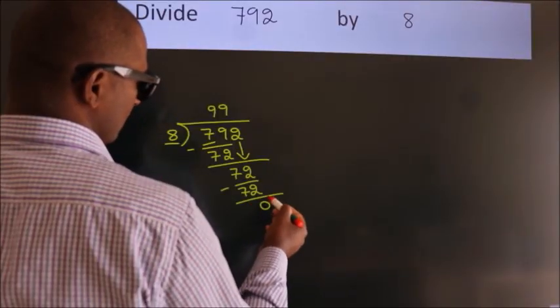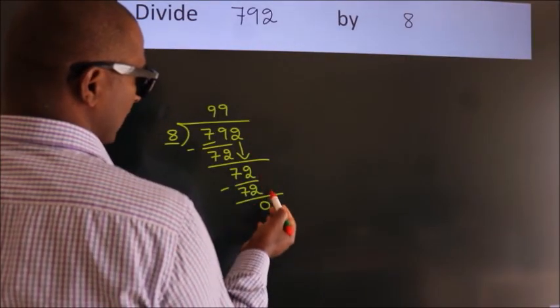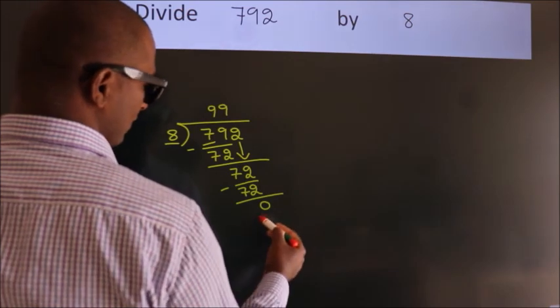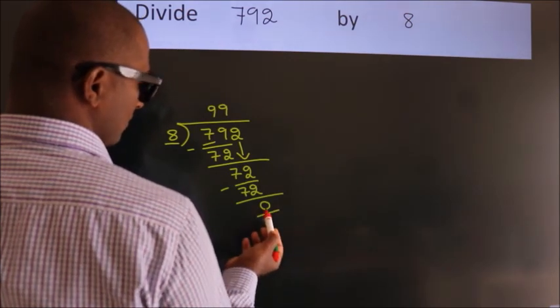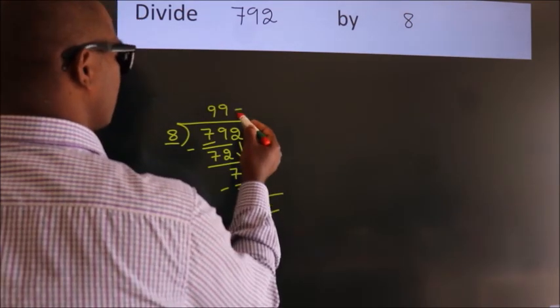After this, no more numbers to bring down. And we got remainder 0. So this is our quotient.